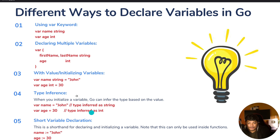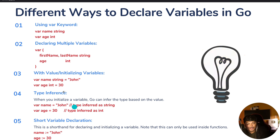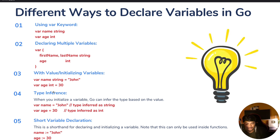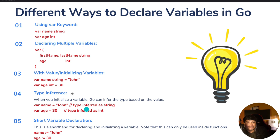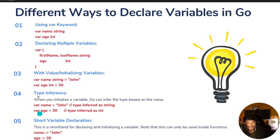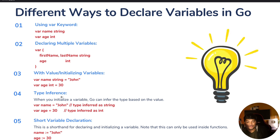The fourth way is type inference. When you initialize a variable, Go can infer the type based on the value. For example, 'var name = "John"' — Go will automatically infer the type as string. Similarly, 'var age = 30' — Go will automatically infer the type of the age variable as integer.